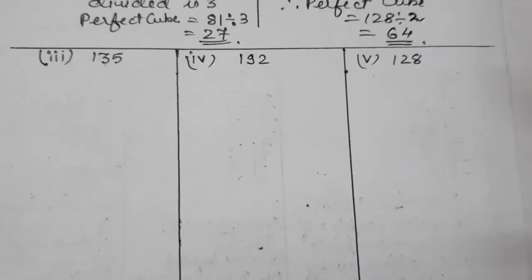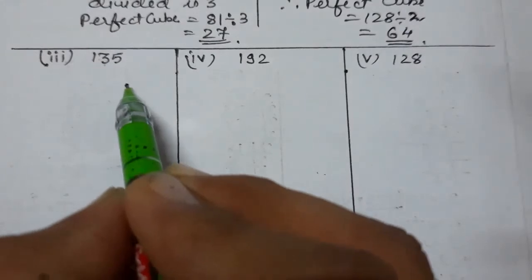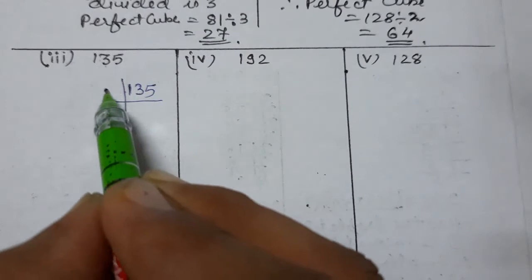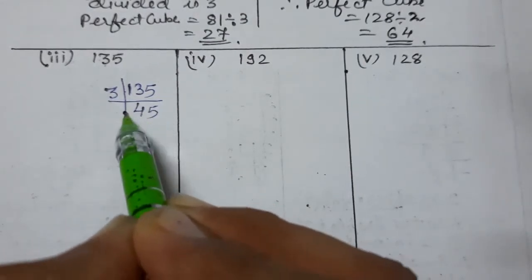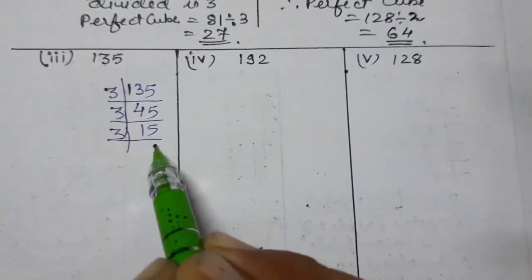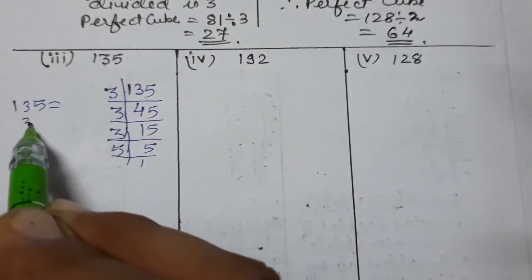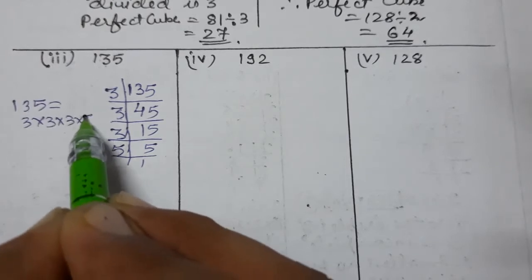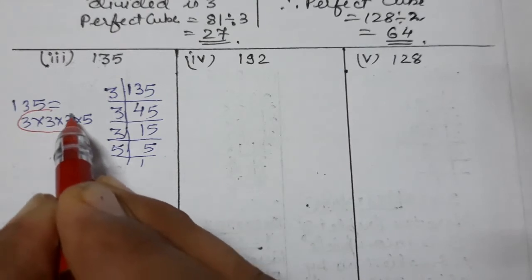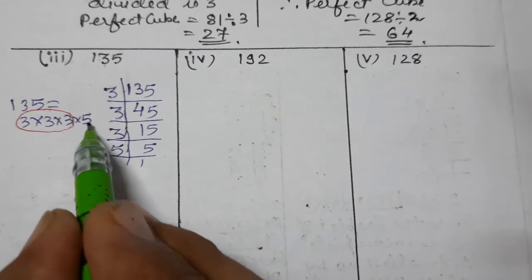Now we'll do the third part. Again take prime factors of 135: 3 into 45, 3 into 15, 3 into 5, and 5 into 1. So 135 can be written as 3 × 3 × 3 × 5. The triplet of 3 is complete, but we have one 5 left over that we need to remove.